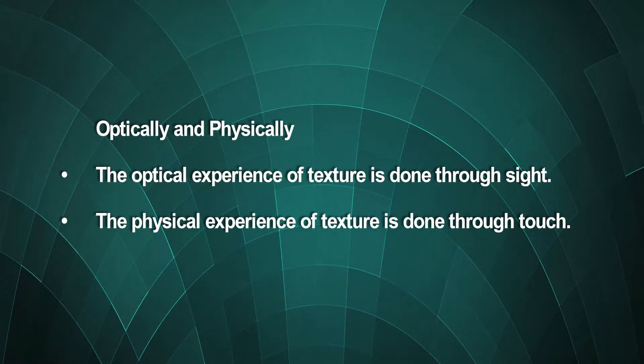Texture refers to the surface qualities that have the ability to translate into tactile illusions. The quality of an artwork depends on its texture. In simpler terms, texture refers to the roughness or smoothness of the material used for making the art. The experience of texture is done in two ways: optically and physically. The optical experience of texture is done through sight, while the physical experience of texture is done through touch.